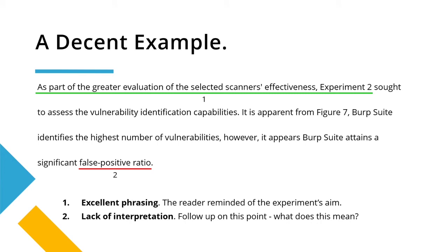Here's a decent example using the same imaginary experiment regarding vulnerability scanners. The first point here is excellent, so definitely take note of this: it's reminding the reader of what the experiment set out to do. As part of the greater evaluation of select scanners' effectiveness, Experiment 2 sought to assess vulnerability identification capabilities. That is superb — this is what you should start every subsection with. However, it's let down because through the rest of it we're not really seeing much of the data.